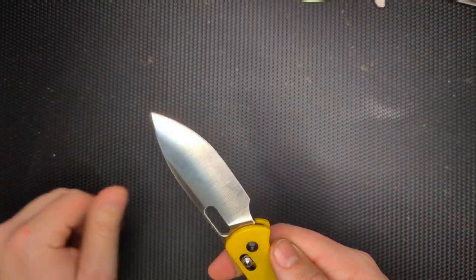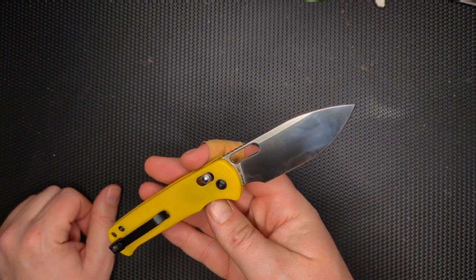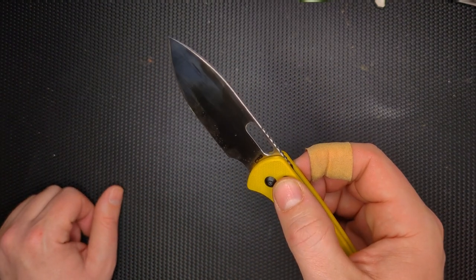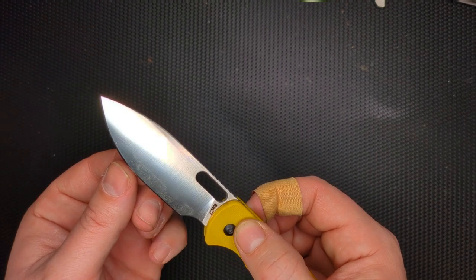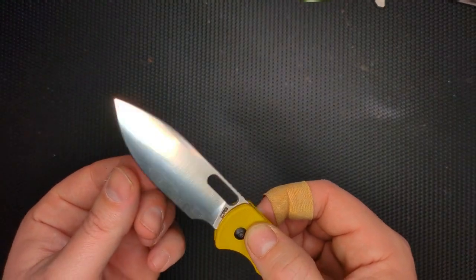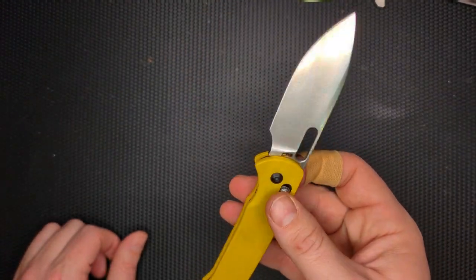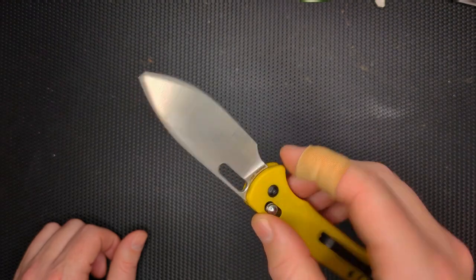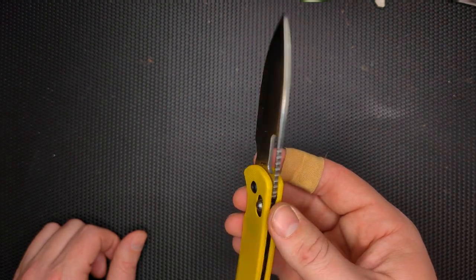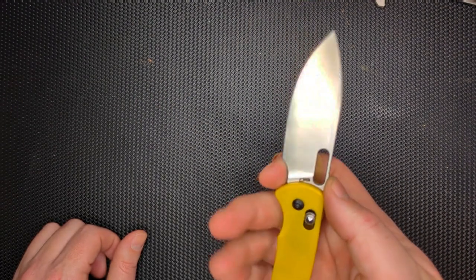CJRB is Artisan Cutlery's budget brand. The shape of this blade is almost like a leaf shape to it. It's very nice for poking. It's okay for utility cuts. I found that I used this a lot in a lot of different scenarios, kind of as a beat up banger knife. And it worked just fine for that.